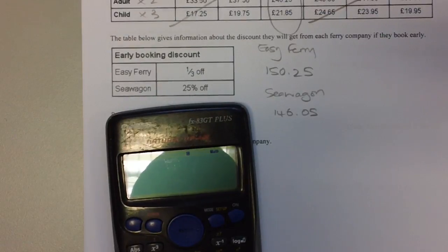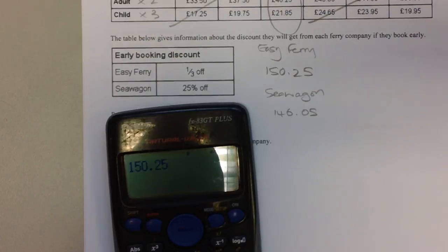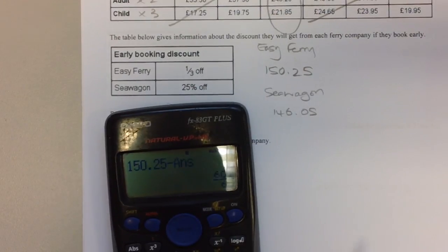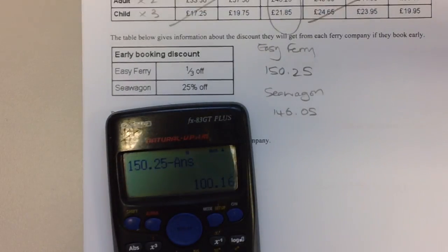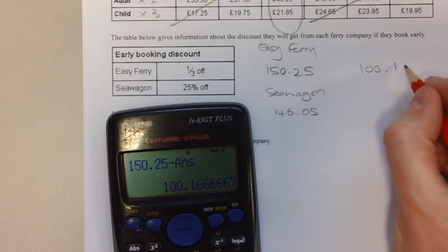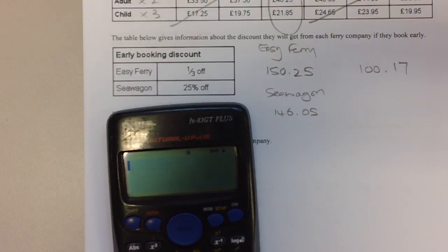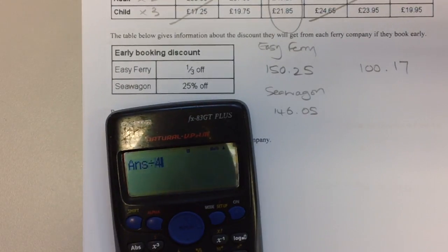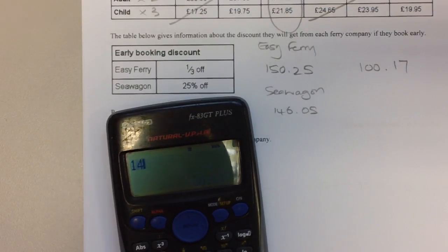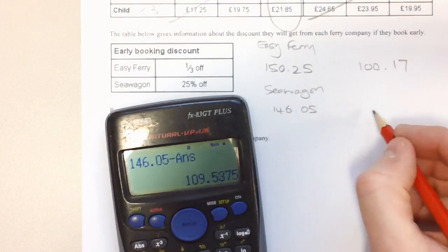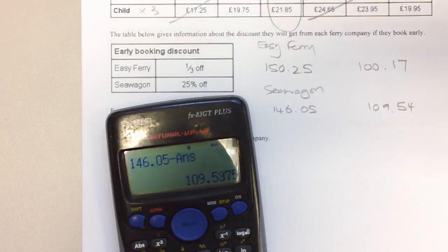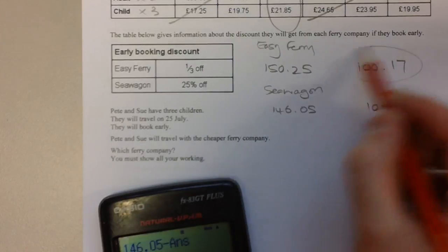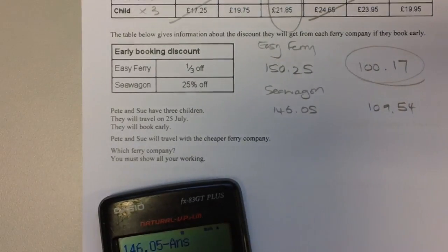Easy Ferry has a third off. The way you find a third is you divide by three, then you subtract that from the original amount. So the cost of going with Easy Ferry with the third reduction is £100, and rounded to two decimal places because this is money, 17 pence. Sea Wagon has a 25% reduction. 25% is the same as a quarter. £146.05 with the reduction is £109.54. Now in order to finish off, we have to say which ferry company they should travel with. In this case they should travel with Easy Ferry because the tickets are cheaper.